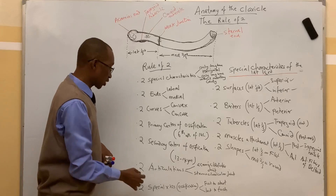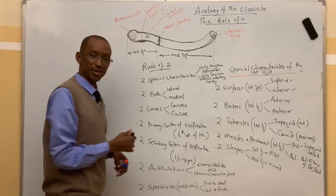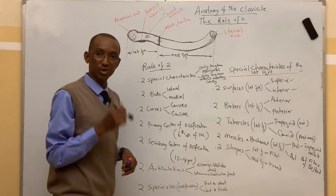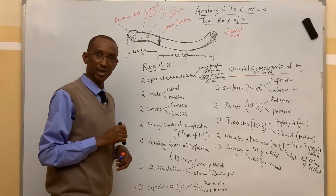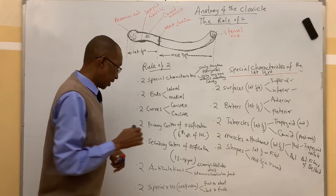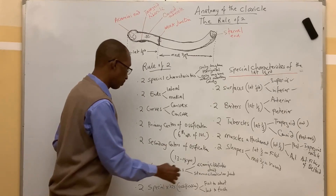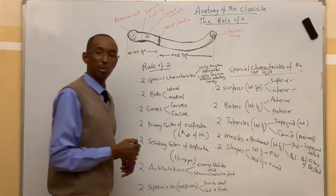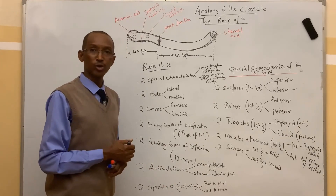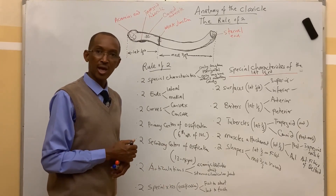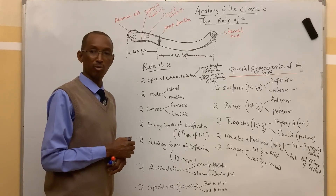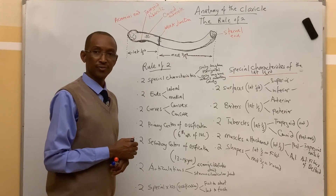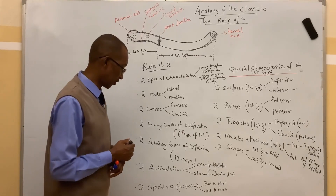The clavicle also has two special characteristics with regard to ossification. It is the first bone in the human body that begins ossification, and it is also the last bone in the human body that finishes ossification.